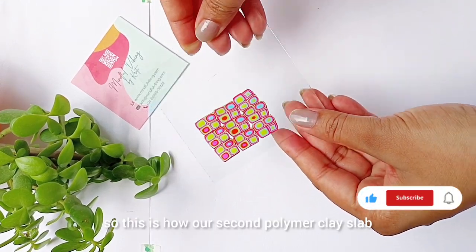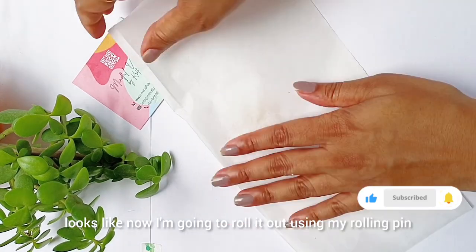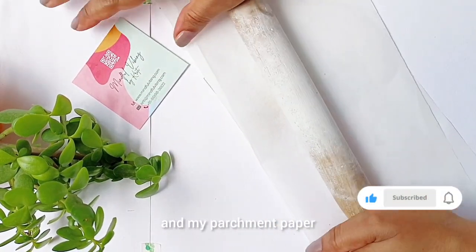So this is how our second polymer clay slab looks like. Now I am going to roll it out using my rolling pin and my parchment paper.